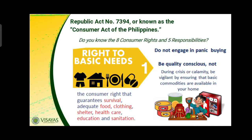The first consumer right is the right to basic needs — everyone has the right to access basic needs. The consumer right guarantees survival: adequate food, clothing, shelter, healthcare, education, and sanitation. Consumers should be conscious of the quality of what they buy, and avoid panic buying during emergencies such as typhoons, because other people also have the right to access basic needs.